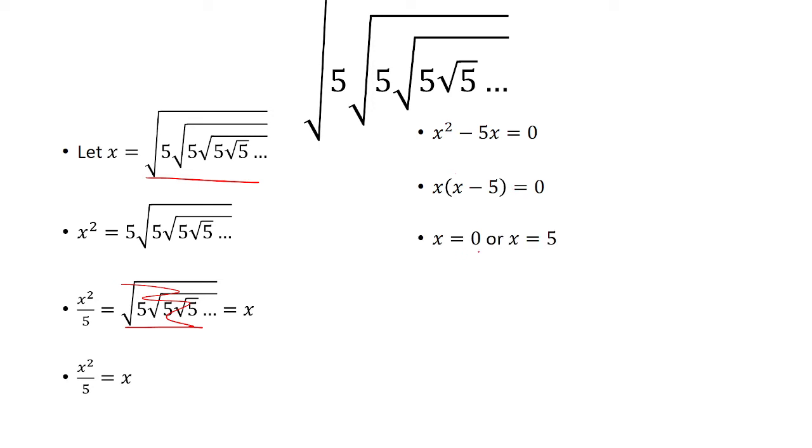That means either x is 0 or x is 5, but clearly x cannot be 0 because we're taking the square root of a positive number. It has to be positive, so our final answer is x equals 5.